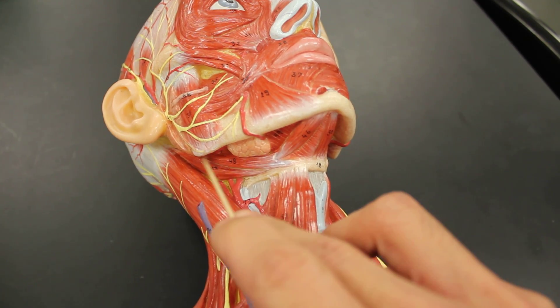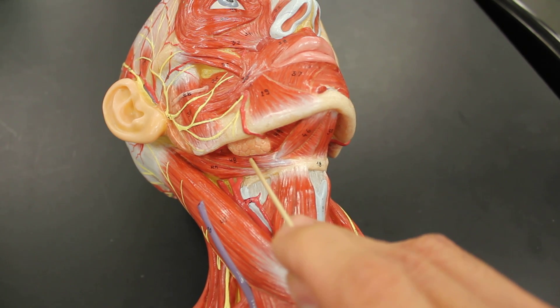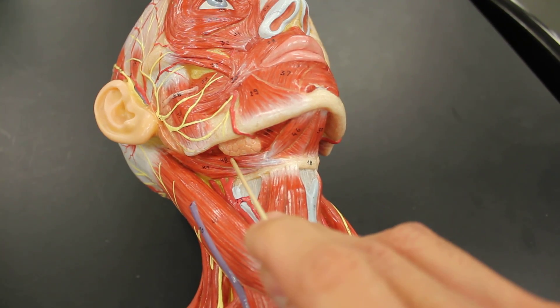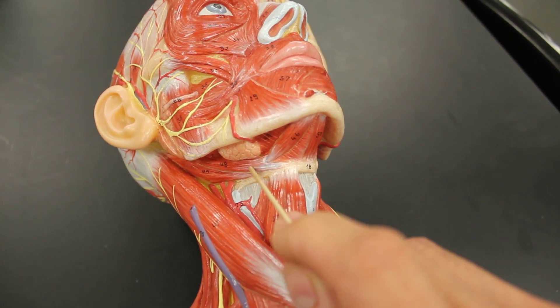Following anteriorly to the posterior belly of digastric would be the stylohyoid. It comes from the styloid process to the hyoid bone and that's why it's named.